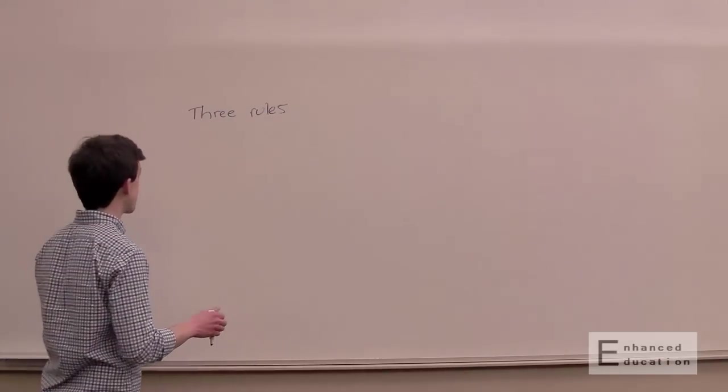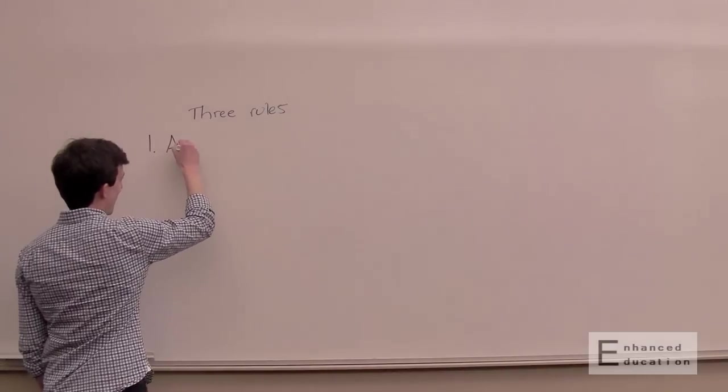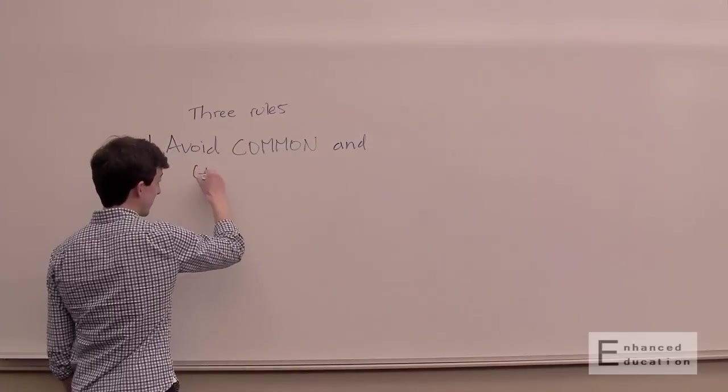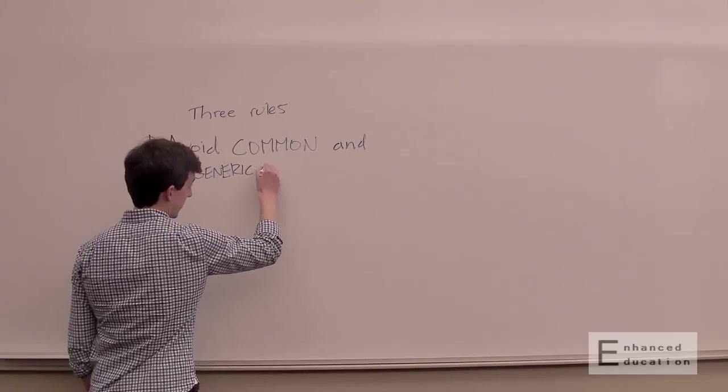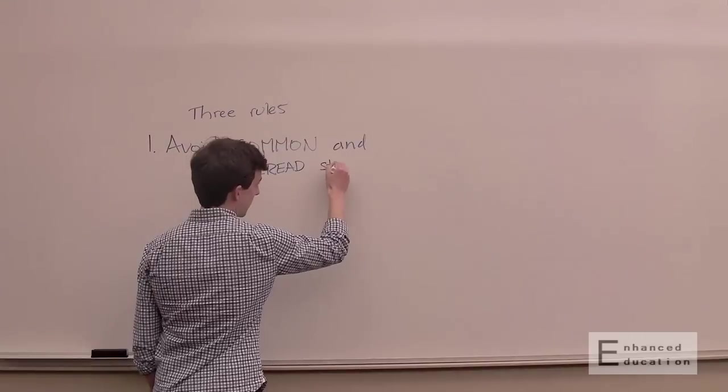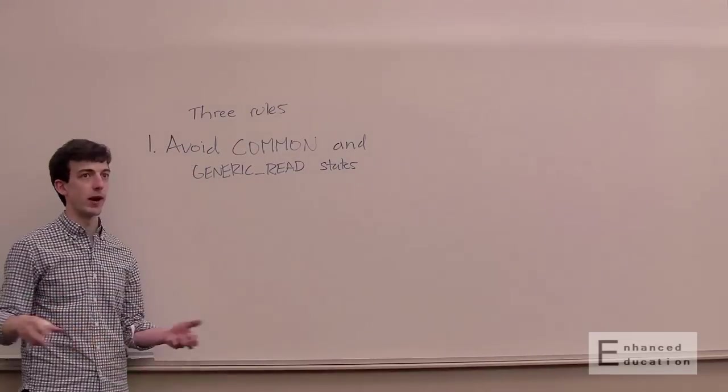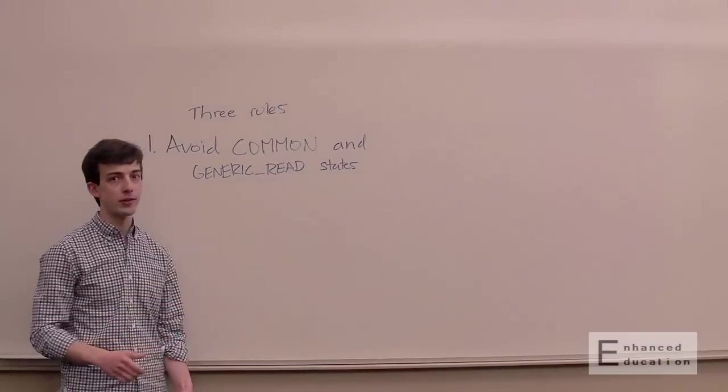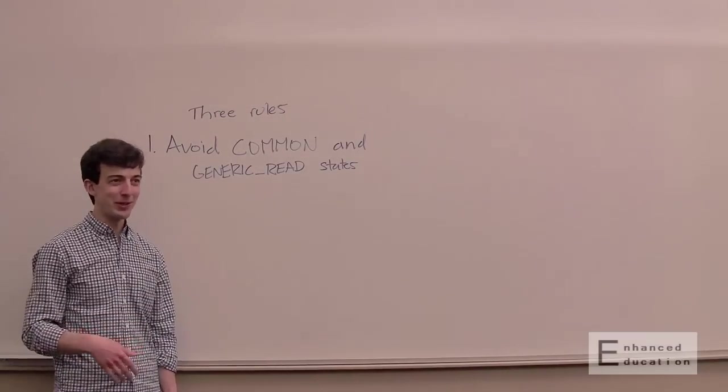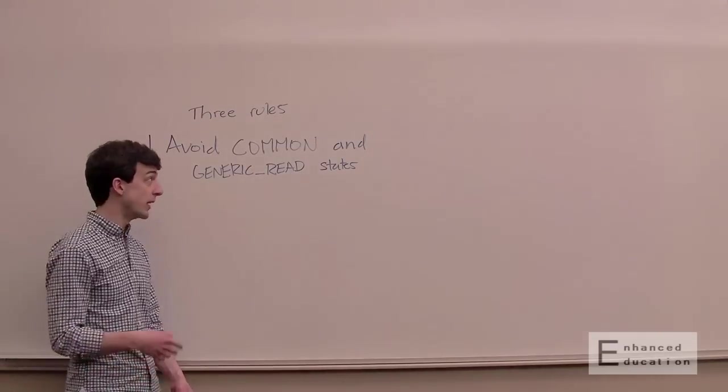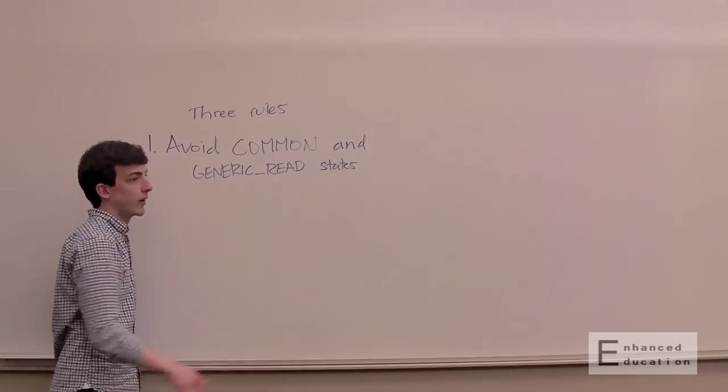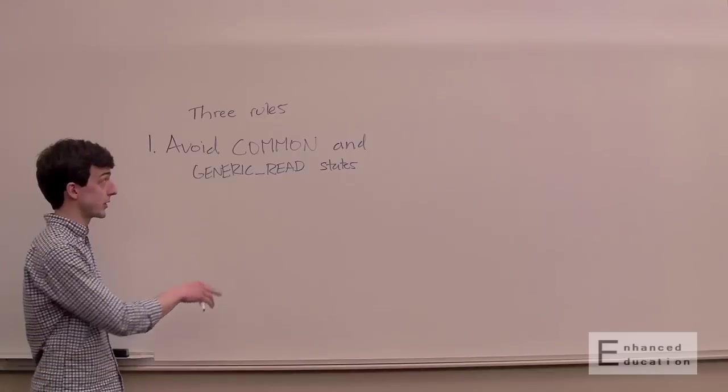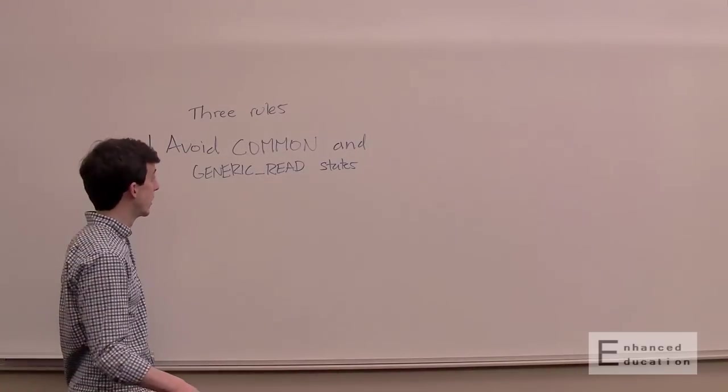So the first rule, avoid common and generic read states. So these states by their name imply that a resource can be used in a variety of situations. Generic read is actually the OR of like five different states. So if you put a resource in generic read, you're saying I want to use it as index buffer or a constant buffer or a vertex buffer or as a pixel shader resource or a non-pixel shader resource or as an indirect argument buffer. So it's a ton of different things. So any time you want to change or if any time you do change a resource to generic read, the hardware is going to go say, okay, this could be used all over the place. I'm going to have to flush a bunch of caches. I'm going to have to make sure I insert a pipeline stall. It's really expensive. And odds are you're not going to be using a single resource in like five different ways or six different ways. So really avoid this.